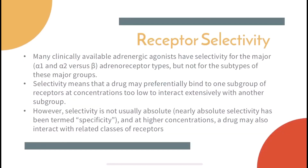For receptor selectivity, many clinically available adrenergic agonists have selectivity for the major adrenoreceptor types, but not for the subtypes of these major subgroups. Selectivity means that a drug may preferentially bind to one subgroup of receptors at concentrations too low to interact extensively with another subgroup. However, selectivity is not usually absolute; nearly absolute selectivity has been termed specificity. At higher concentrations, a drug may also interact with other classes of receptors.